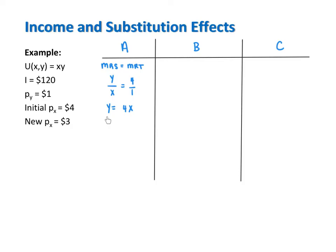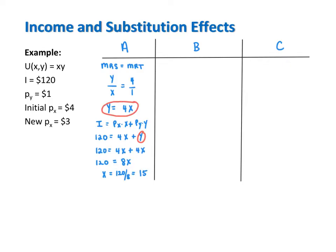We use this equation to substitute in for Y into the budget constraint. The budget constraint here is 120 equals 4X plus Y. Substituting Y equals 4X gives us 120 equals 4X plus 4X, which makes X equal to 15. Since Y equals 4X, when X is 15, Y is 60. The consumer's utility-maximizing bundle before the price change has 15 units of X and 60 units of Y.